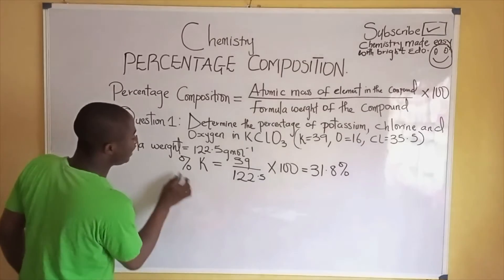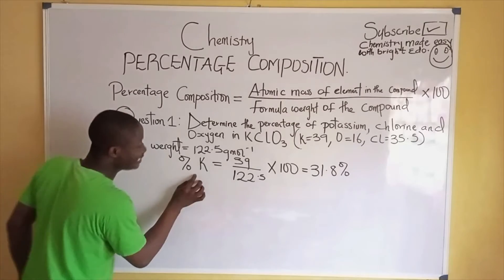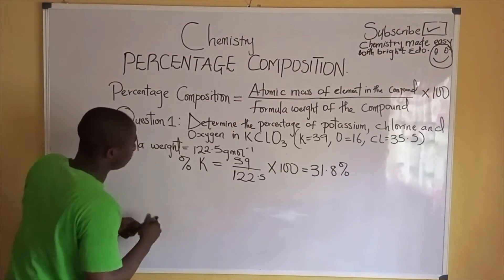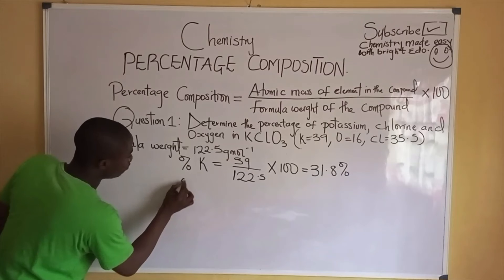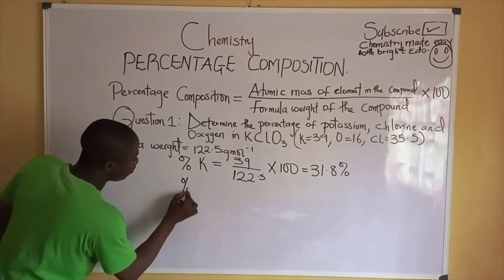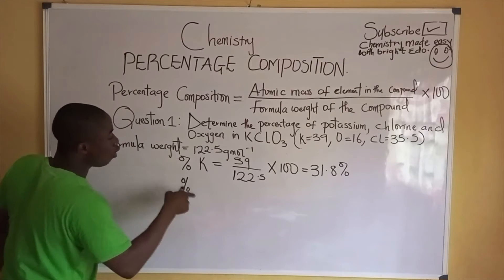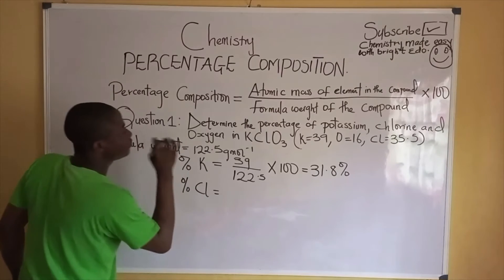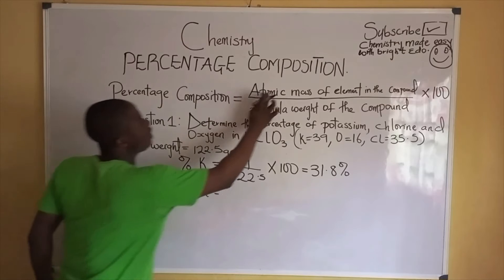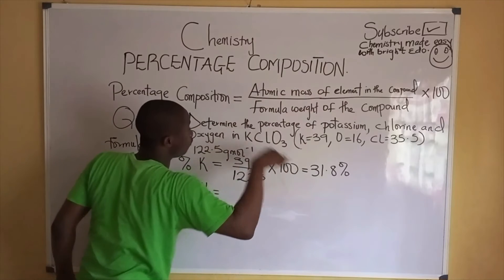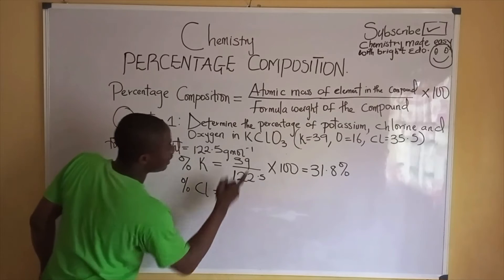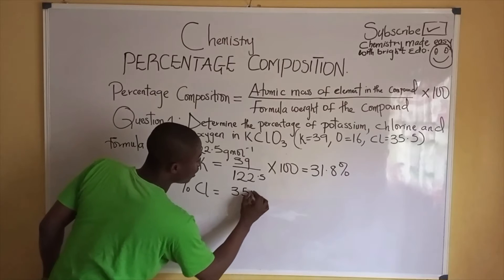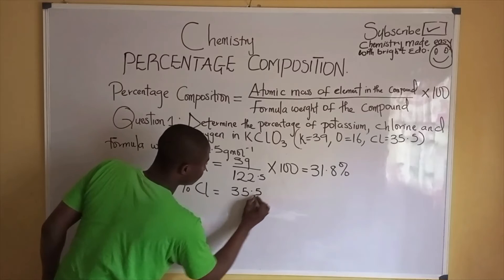Now let's determine the percentage composition of chlorine in the compound. The percent composition of chlorine: the atomic mass of chlorine is given to be 35.5, divided by the formula weight of 122.5, times 100, giving 29.0%.